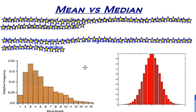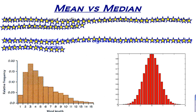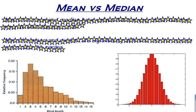We've seen a number of different ways to describe our distribution: measures of spread, measures of center, different summary statistics, the five number summary. But what about mean and median? Those are two measures of center, but when do I use the mean to describe the center, and when should I use the median to describe the center?